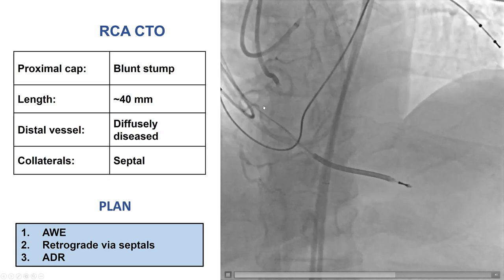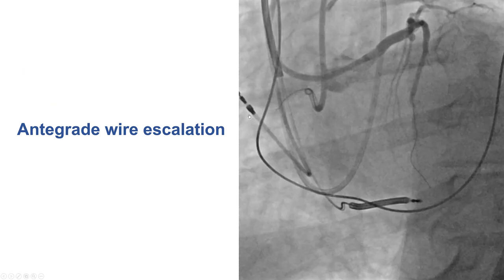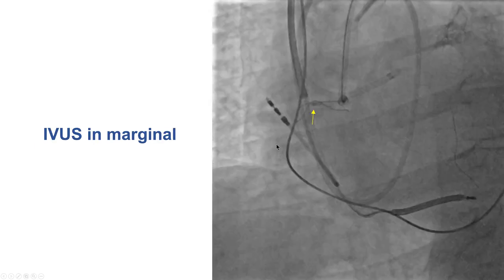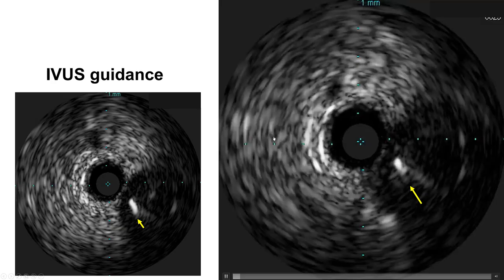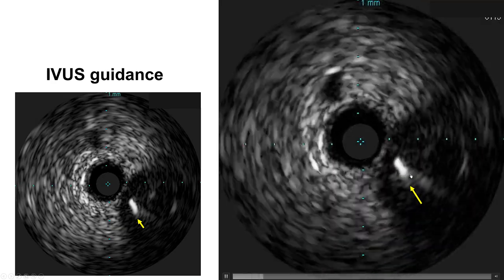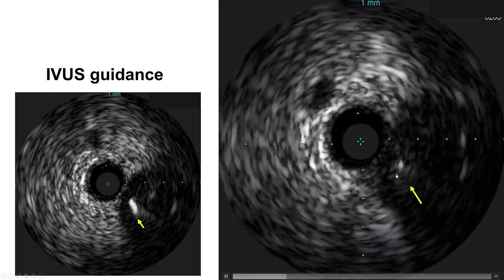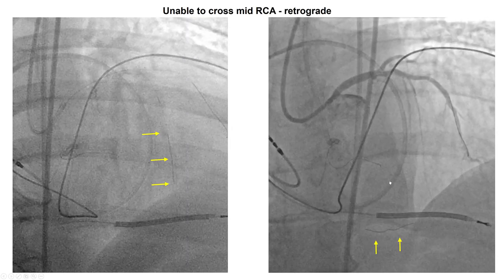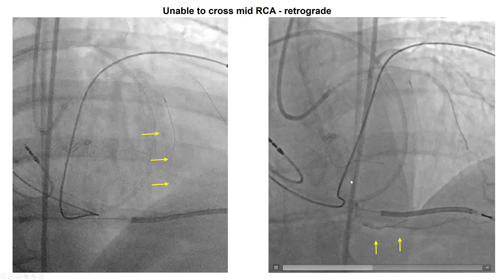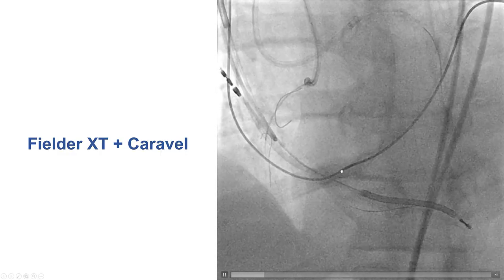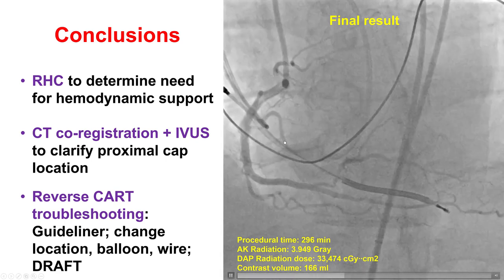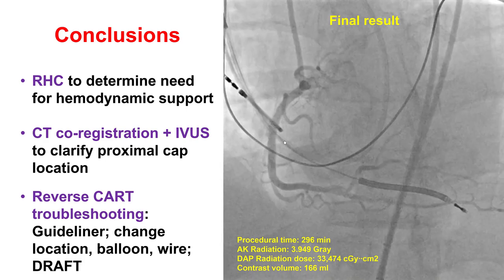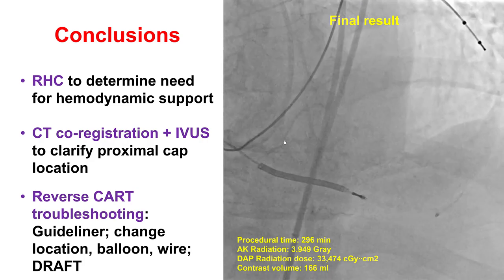This is an example of a right coronary CTO with multiple branches at the proximal cap — very ambiguous, making wire escalation very challenging. CTO registration was used and can sometimes help clarify the ambiguity, but did not work here. IVUS in a side branch showed the wire was actually going within the occlusion segment, which was very useful for directing the wire intraplaque. Eventually antegrade attempts failed and the retrograde approach was used, allowing successful recanalization. The key approaches for proximal cap ambiguity are: IVUS, move-the-cap techniques, and retrograde.